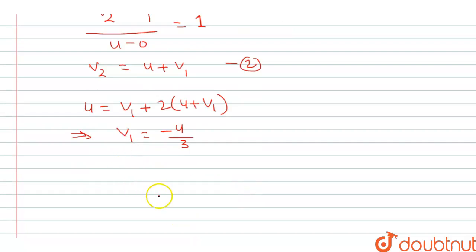And v2 will be simply, we will add the equation. v2 is equal to v1 plus u, that is minus u upon 3 plus u, which is 2u upon 3.